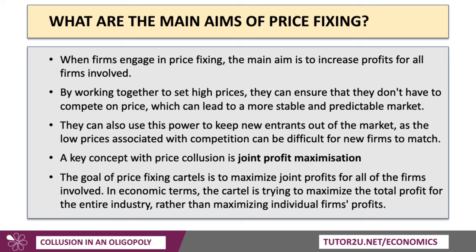The main aim of price fixing is sometimes called joint profit maximisation — the aim is to increase profits for all firms involved. You don't have to compete on price, which reduces uncertainty and makes the market more stable and predictable. You can also use this power to keep new entrants out of the market. The key concept is joint profit maximisation: fix price and restrict output within a cartel to maximise the joint profits for the firms concerned. The cartel is trying to achieve a monopoly profit outcome rather than maximising individual firms' profits.